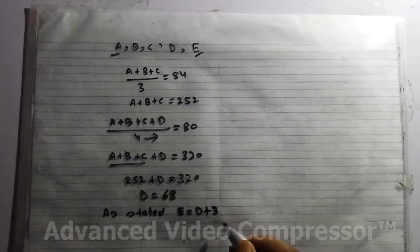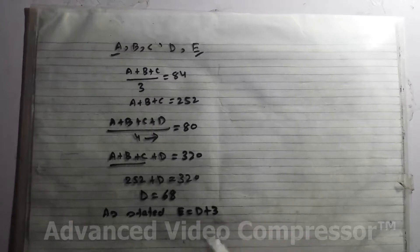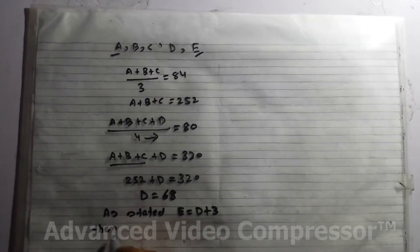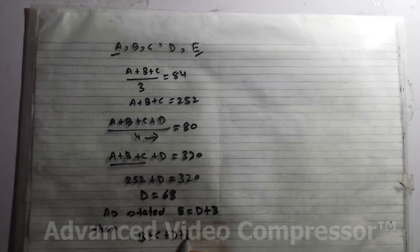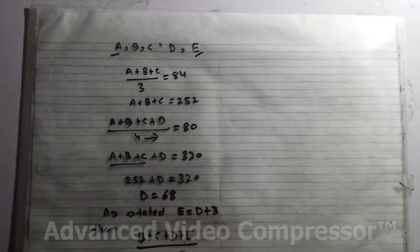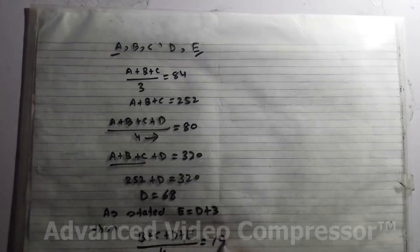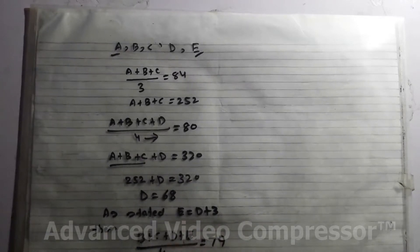Then the average weight of B, C, D and E becomes 79. So (B + C + D + E) / 4 = 79. Now here we put the values.